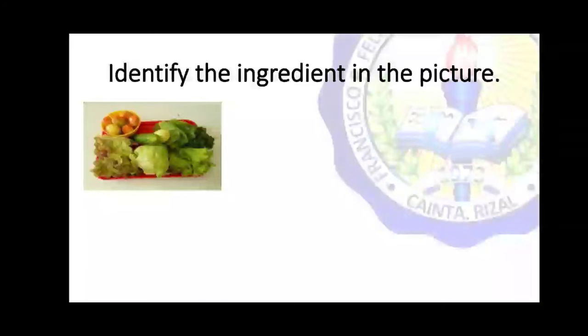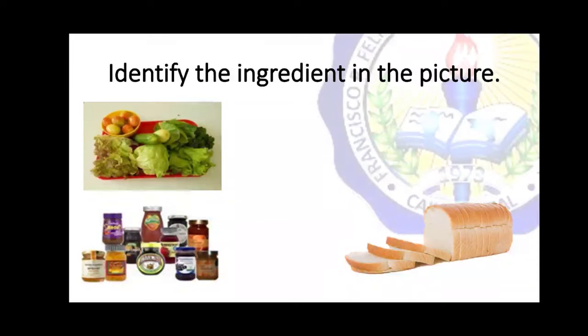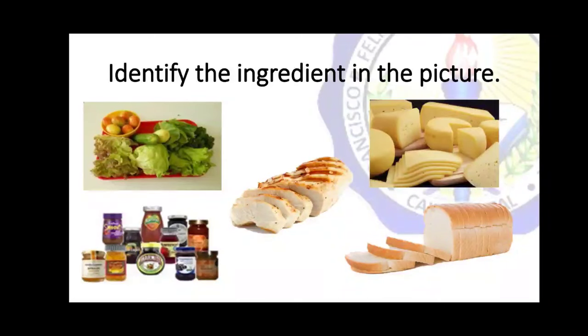Next, let's have another round of activity. This time you are going to identify the ingredient in the picture. What ingredient is in the first picture? Yes, you are correct — it is vegetables. Next picture — very good, bread. How about picture number three? Yes, condiments. Picture number four — poultry. And the last picture? Yes, it is cheese.